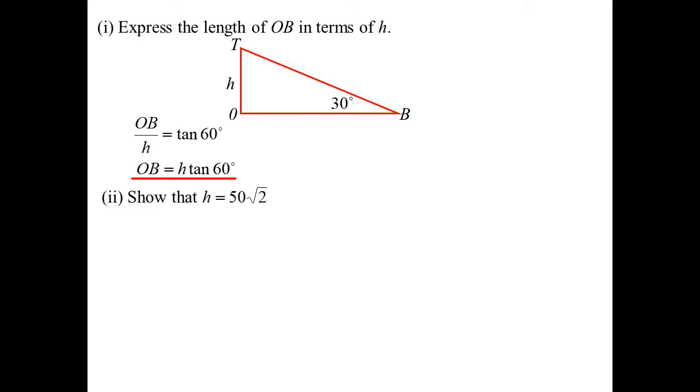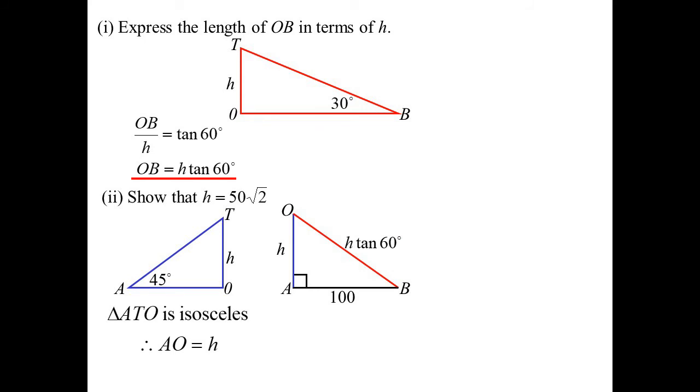Show that H is 50 root 2. I'm now going to look at the other triangle with the 45 degrees in it. So OT is H, but this is an isosceles triangle. Because 45 degrees, it must be my 45 degree right-angle triangle, which we know is isosceles. So AO is also H. But now I'm going back to the other triangle that I haven't drawn yet. So AOB. And we know that AO is H. We just said that. We found OB was H tan 60. AB, they told me, was 100.